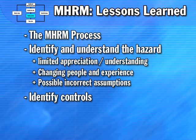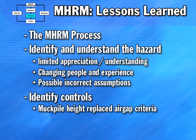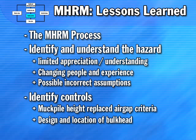Identify controls to establish effective methods of reducing unacceptable risk through application of controls or barriers. The change of control from air gap limitation of 10 to 20 metres to a 60 metre muck pile height as a method to manage air blast risk may be an example of this problem. The design and location of the bulkhead on one level is another. In both cases the control in place was not adequate or appropriate for the specific major air blast event.